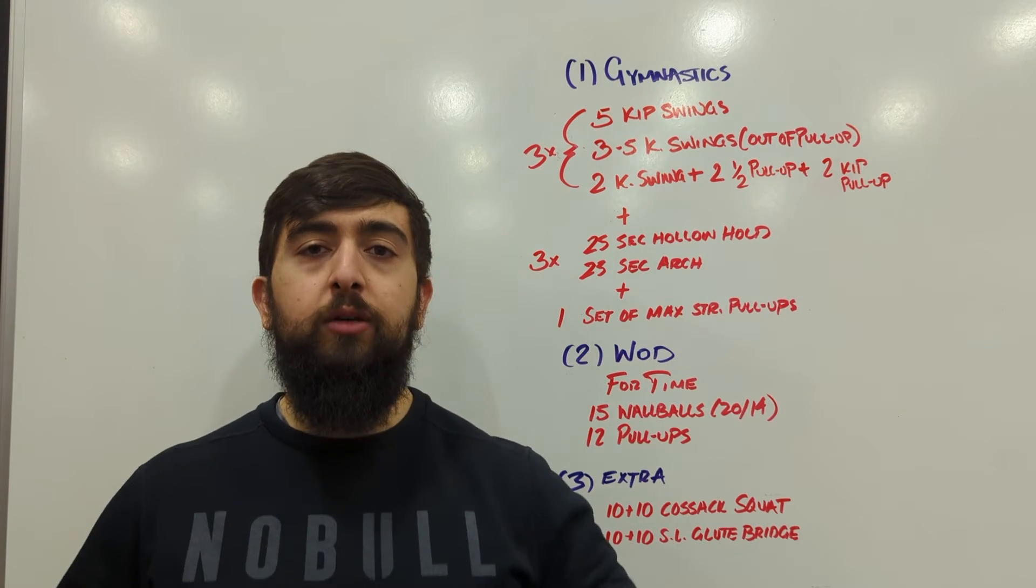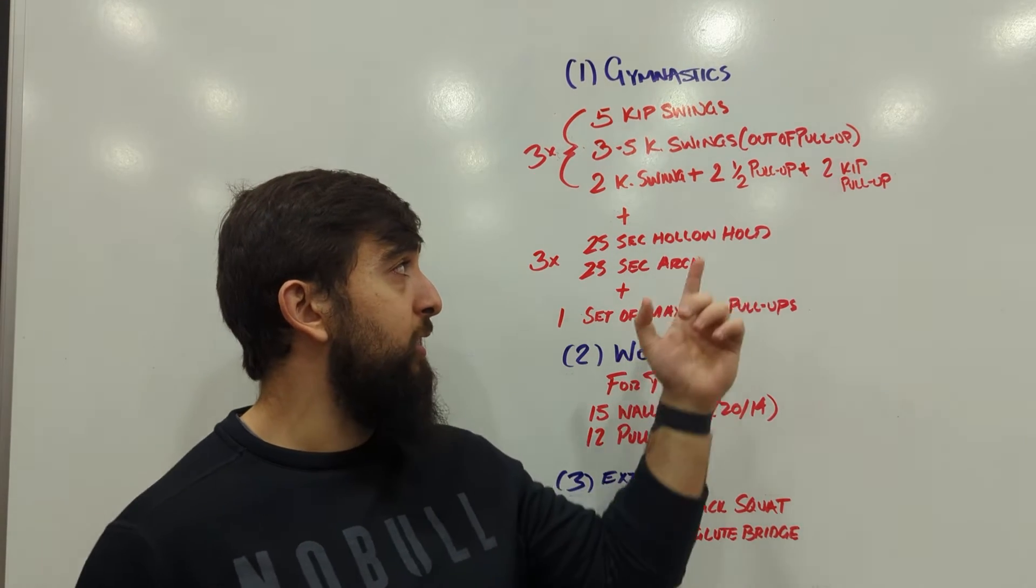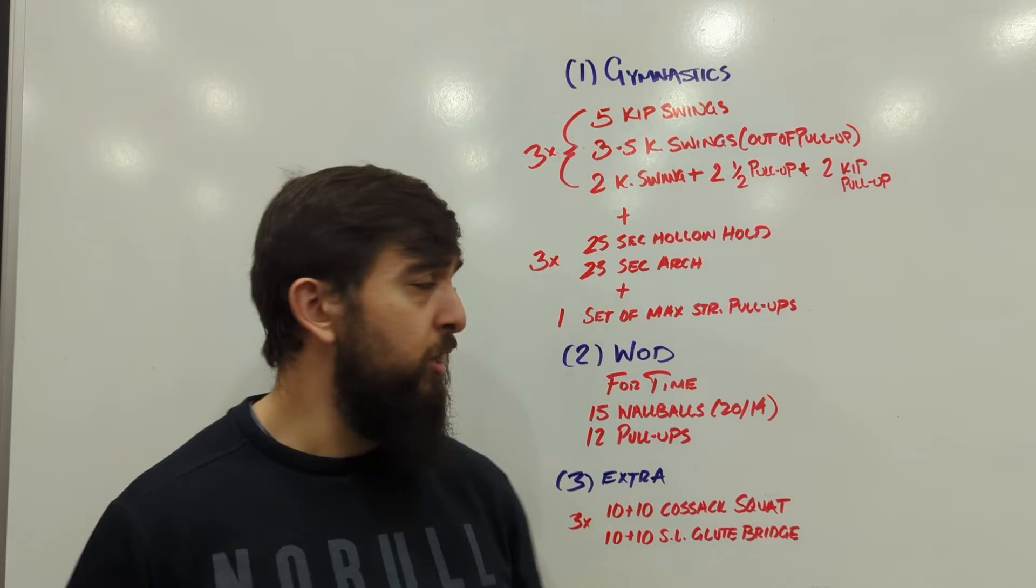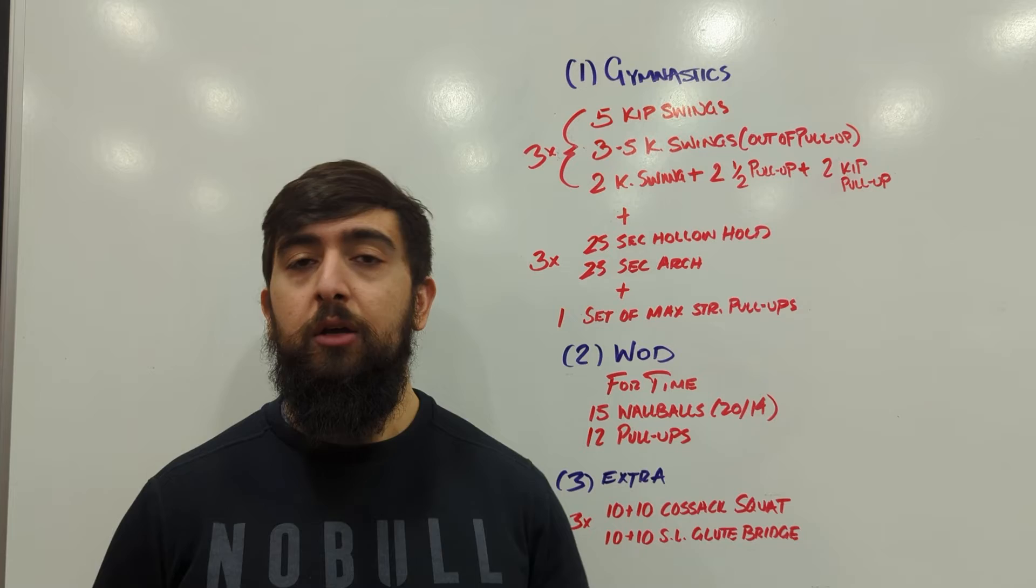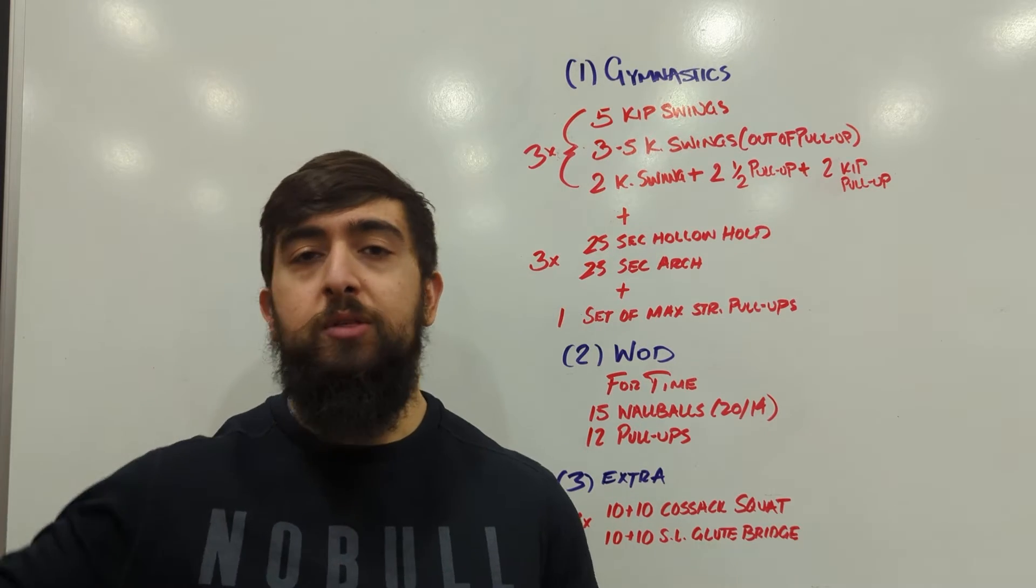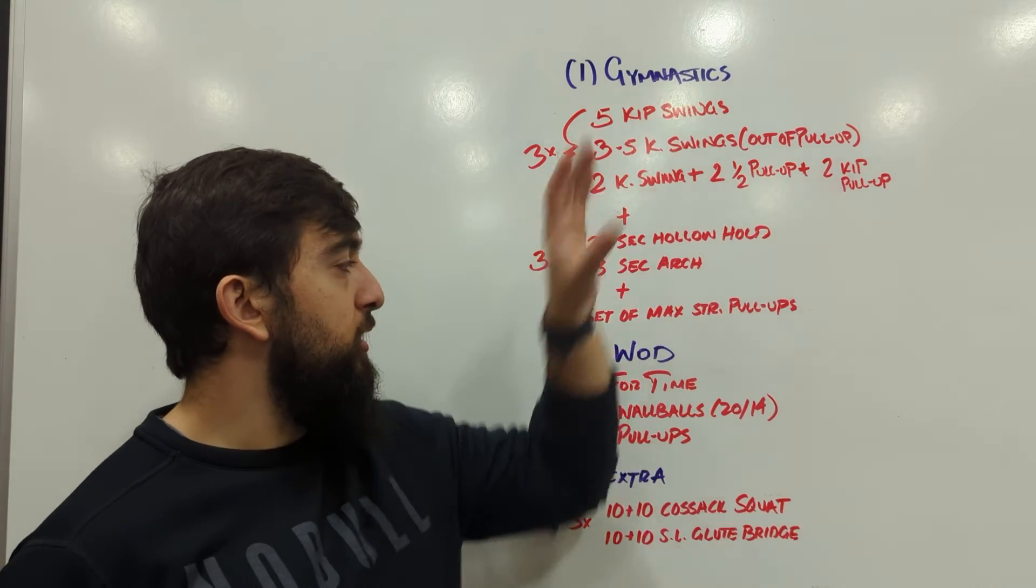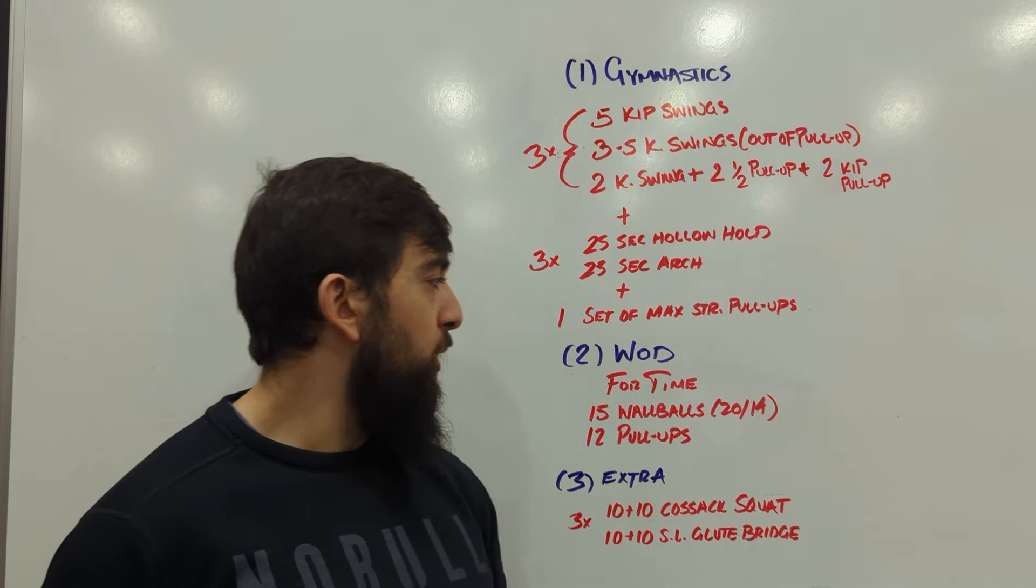Once you're done three rounds of that, you're going to go three rounds of core work. So we're going to finish that off with 25 second hollow, 25 second arch, and then one set of max strict pull-ups. Use the rings or use the bar, you can do as many as you can for only one set and then you're done the gymnastics.